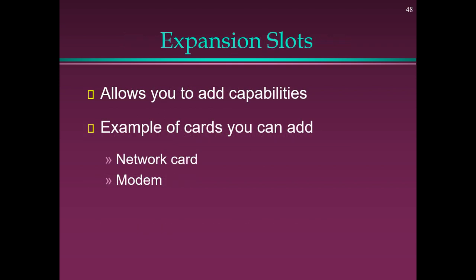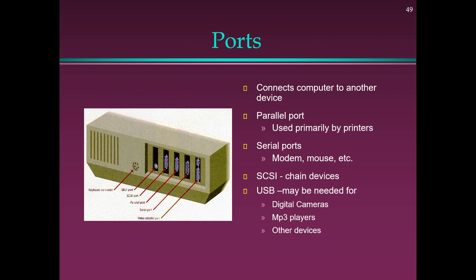Expansion Slots and Ports: Expansion slots allow you to add capabilities — examples include network card and modem card slots. Ports connect the computer to another device. Parallel port is used primarily by printers. Serial ports for modem, mouse, etc. SCSI chains devices. USB may be needed for digital cameras, MP3 players, and other devices.